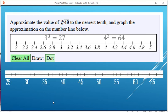Let's put these on a number line. 27 is over here and the 64 over here. 49 is going to live in between those.